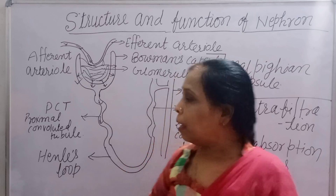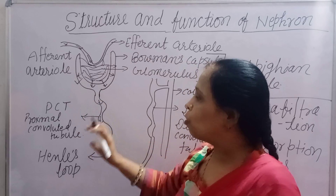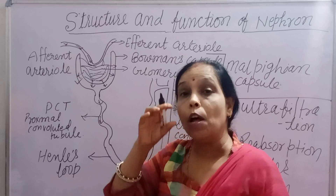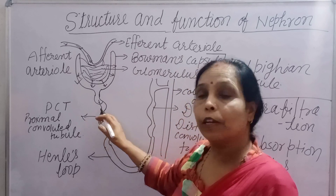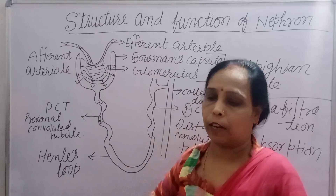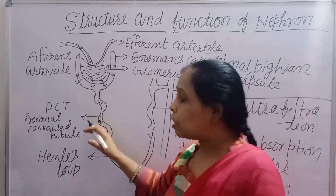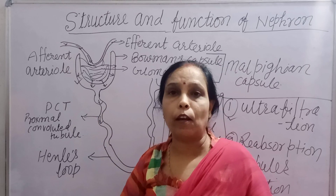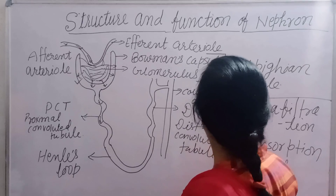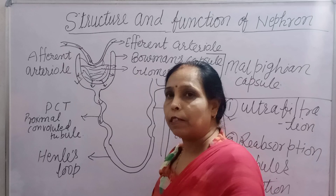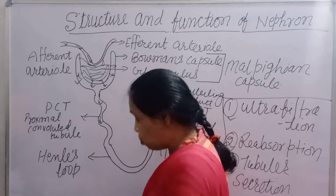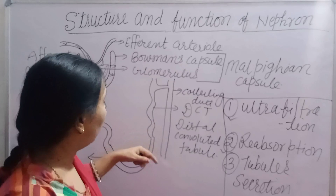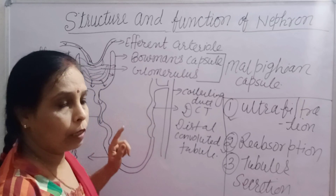In reabsorption, two-thirds of the water along with glucose, amino acids, and vitamins are reabsorbed back into the blood. This can also be called osmoregulation. Reabsorption mainly occurs in the PCT; some water and glucose are also absorbed in the Loop of Henle, and remaining reabsorption occurs in the DCT.